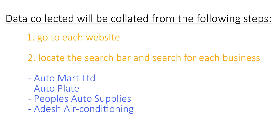My data collected will be correlated from the following steps. I'll go to each website and locate the search bar and search for four businesses. The four business names I'll be searching will be Automart Limited, Auto Plate, People's Auto Supplies, and Addish Air Conditioning.